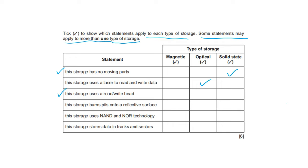This storage uses a read/write head — magnetic storage and optical storage both use a read/write head. This storage bumps pits onto a reflective surface — that is optical storage. This storage uses NAND technology — SSD solid state uses NAND technology. This storage stores data in tracks and sectors — that is magnetic storage.